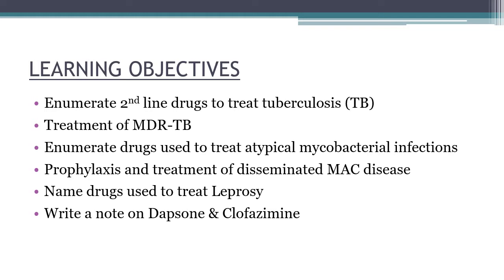Let's check out today's learning objectives. By the end of today's lecture you should be able to: enumerate the second-line drugs used to treat tuberculosis; write down the treatment of multi-drug resistant tuberculosis; enumerate the drugs used to treat atypical (non-tuberculous) mycobacterial infections; write down the profile and treatment of disseminated Mycobacterium avium complex disease; name the drugs used to treat leprosy (Hansen's disease); and write a note on dapsone and clofazimine. These are all important university questions.